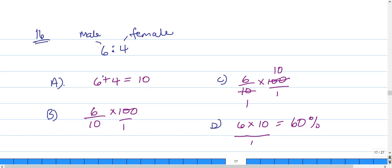Number 16 says in a college the ratio of male to female is 6 to 4. What percentage of the college is male? Let's look at this carefully. We have 6 males to every 4 females.